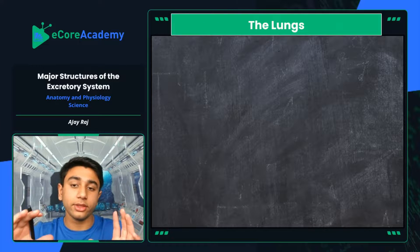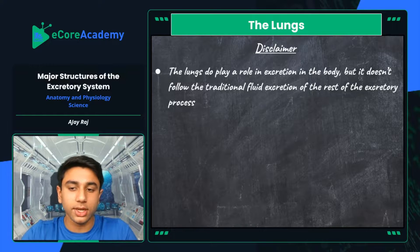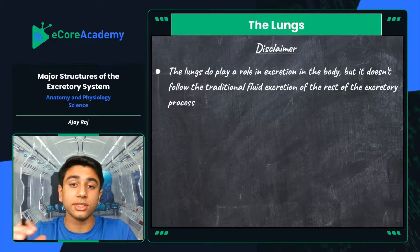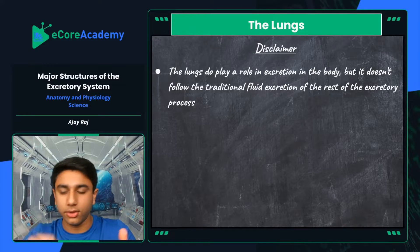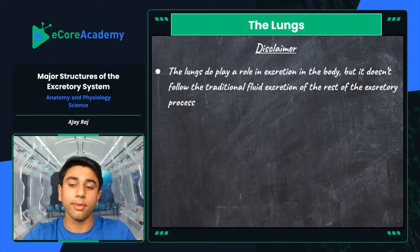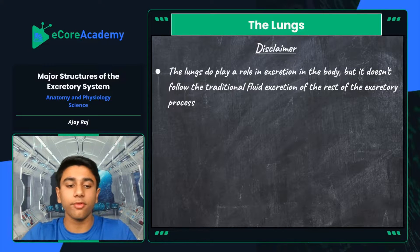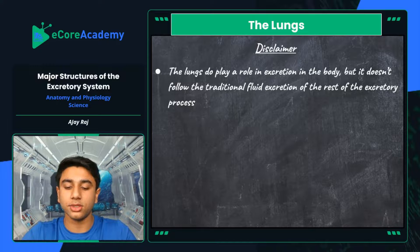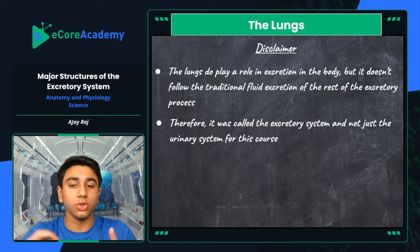For our last slide, a brief overview of the lungs and an important disclaimer. The lungs do play a role in excretion in the body, but it doesn't follow the traditional fluid excretion covered in this video. It's different from the rest of the excretory system because it deals with gaseous excretion — oxygen enters the lungs, and carbon dioxide is released. Air is approximately 70–80% nitrogen and 21% oxygen, and the lungs filter it to pass oxygen to the bloodstream, while carbon dioxide is the byproduct exhaled. The lungs are technically part of the circulatory system and are not connected to the urinary part of the excretory system.